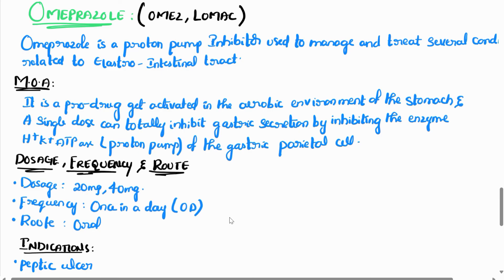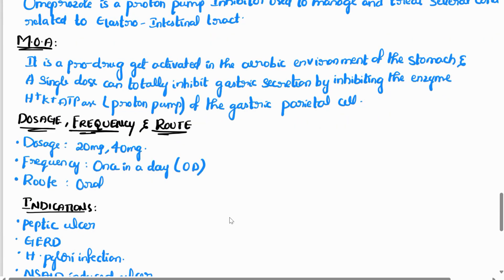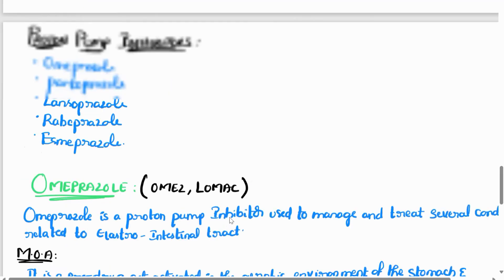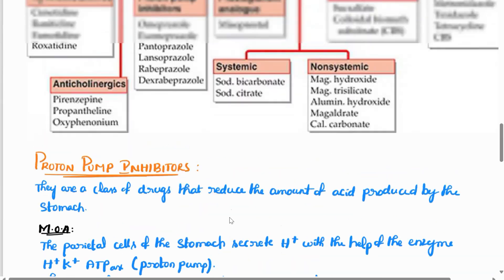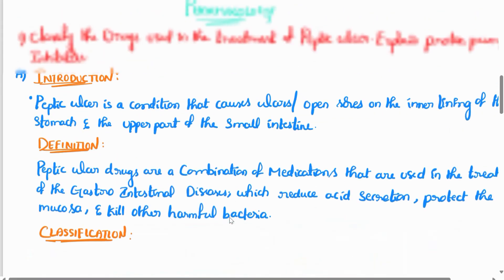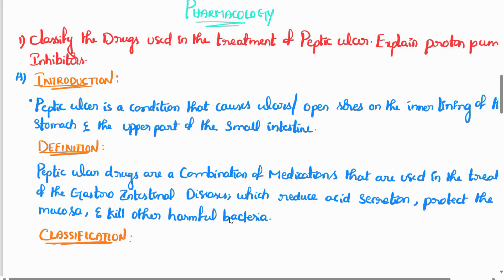For each individual drug, the explanation pattern is: introduction, mechanism of action, drug interactions, dosage, frequency, route, indications, contraindications, and adverse effects. This is the pattern I followed in my pharmacology exam, and if you follow this pattern, you can explain any drug effectively.